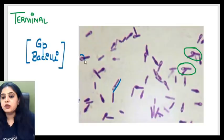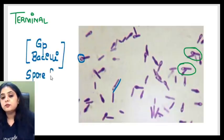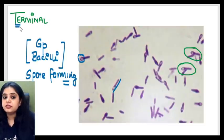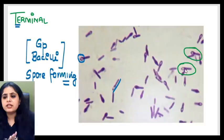Apart from the bacilli morphology, you can also see roundish structures present at the terminal end — so these are spore-forming bacilli, spore-forming organisms. Where the spore is located makes all the difference. In this picture, you can see the spore is present right at the tip, at the terminal end.